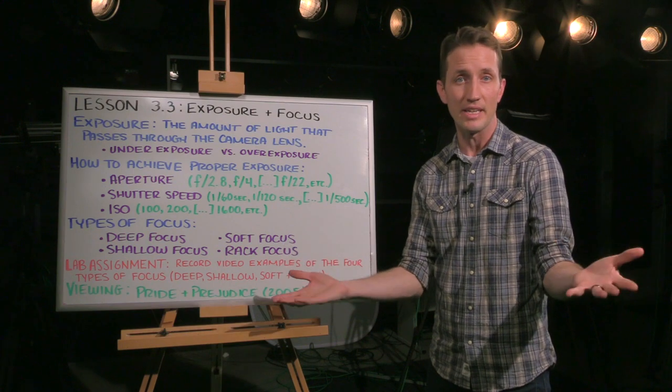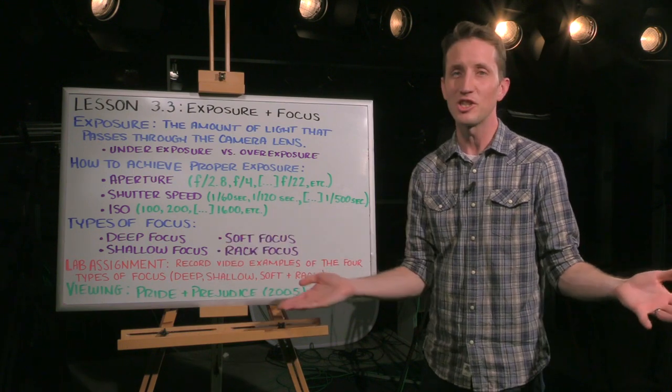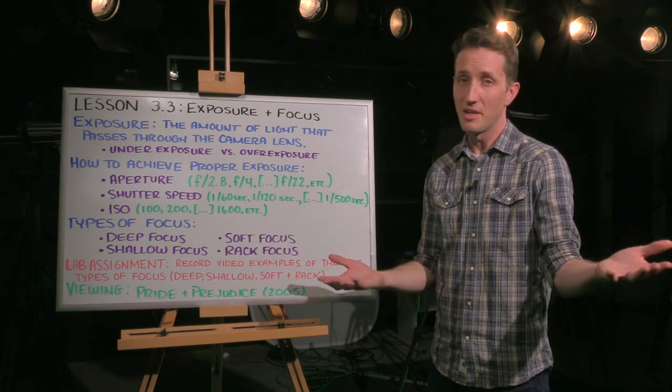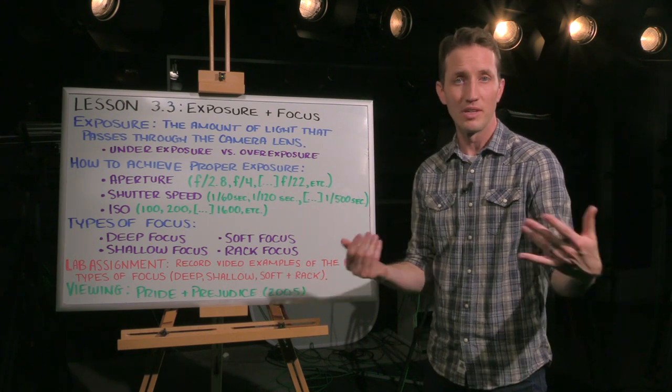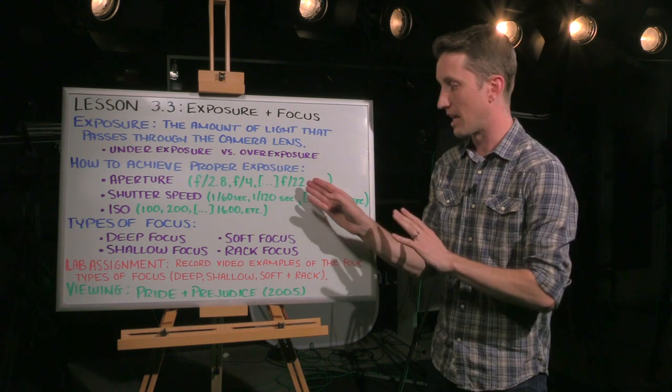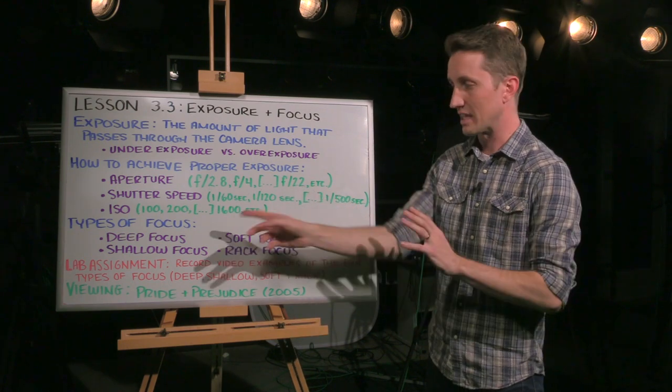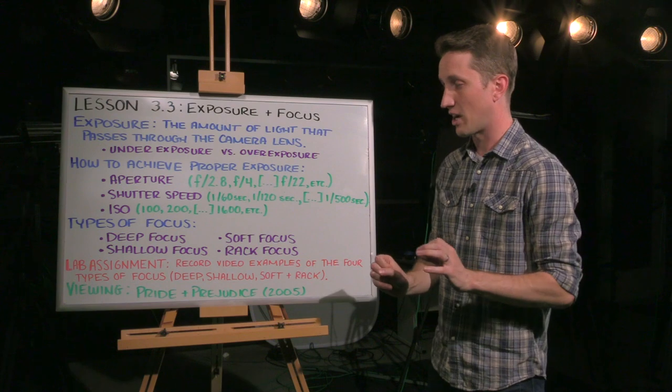So if you want deep focus, you need a lot of light. That's why it's an easy shot to get when you're shooting outside, because the sun is so intense, the sun will allow you to close that aperture, increase that f-stop in order to give you that deep focus shot.